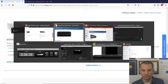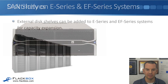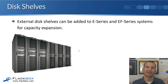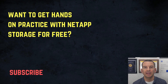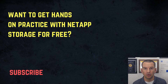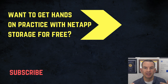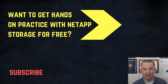Going back to the slides — just like FAS and AFF systems, the way you get extra capacity is by adding disk shelves to the controllers. That was an overview of the E Series and the EF Series. If you want hands-on practice with NetApp Storage for free on your laptop, you can download the free ebook. Also check out the NetApp Storage Complete course, which will teach you everything you could possibly want to know about ONTAP.